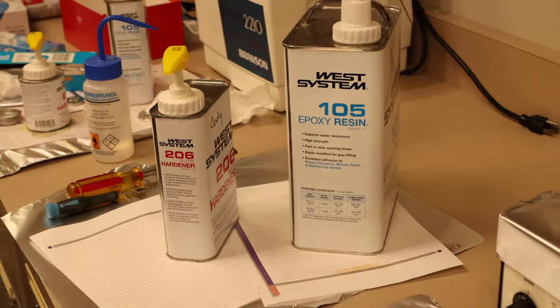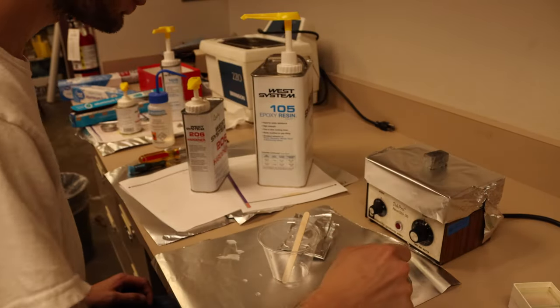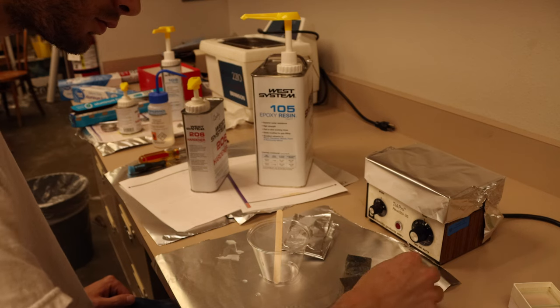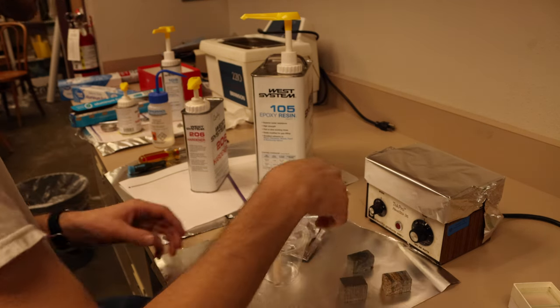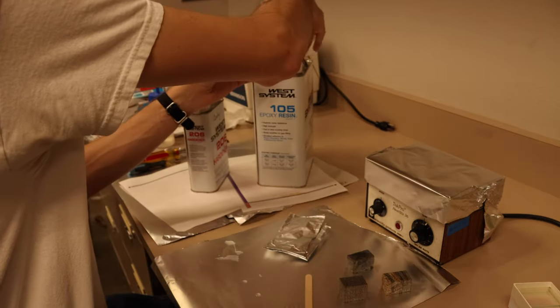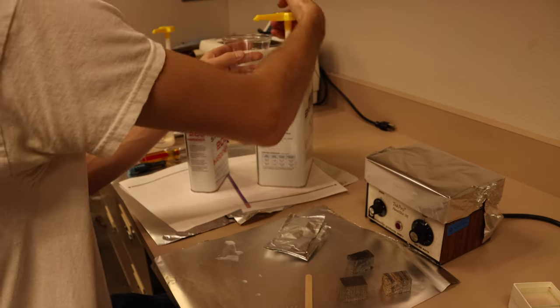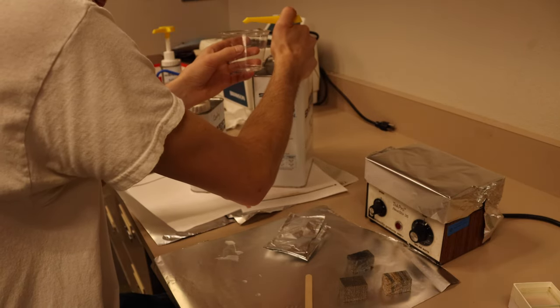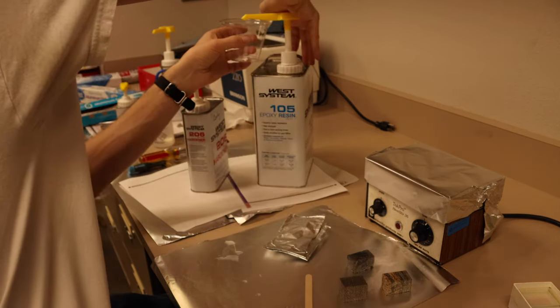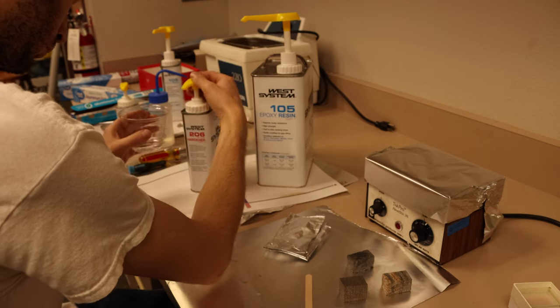And I use this West System epoxy. It's a slow cure epoxy so you have plenty of working time. The resin to hardener ratio is five to one on these, but on the pump style ones all you have to do is use one pump of each and it'll automatically be measured out. These ones are brand new though, so I have to pump the nozzles up first so that I can get one full pump of each.